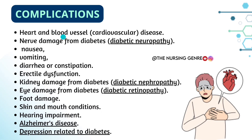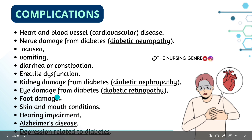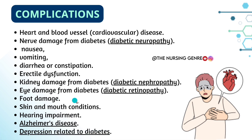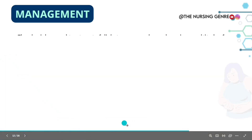Complications of diabetes include: heart and blood vessel diseases; diabetic neuropathy with symptoms such as nausea, vomiting, diarrhea or constipation, and sexual dysfunction; kidney damage — diabetic nephropathy; eye damage — diabetic retinopathy; foot damage; skin and mouth conditions; hearing impairment; Alzheimer's disease; and depression related to diabetes.